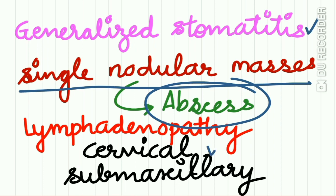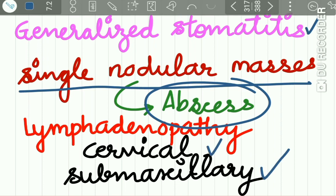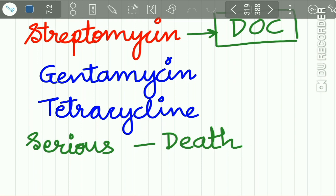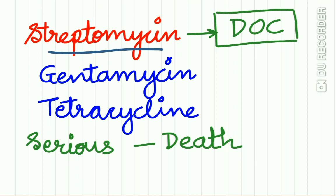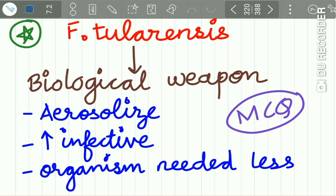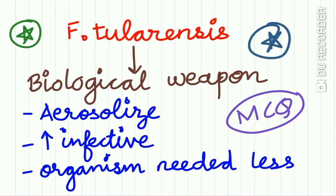There may be severe pain associated with these ulcers, generalized stomatitis, and it appears as a single nodular mass in the oral cavity with subsequent abscess formation. There may also be cervical and submaxillary lymphadenopathy. Treatment is antibiotic therapy — streptomycin is the drug of choice, and the disease also responds well to gentamicin and tetracycline. Before antibiotics, this disease was considered very severe as it resulted in death.